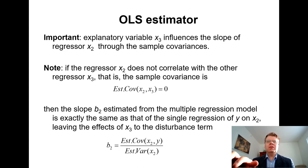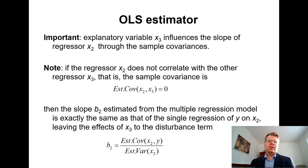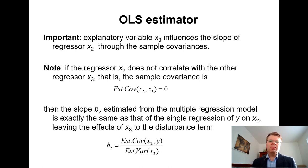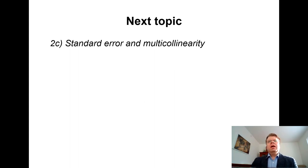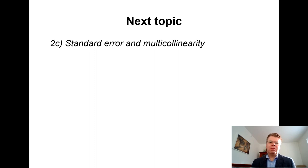The interpretation of B2 in the multiple regression context is the marginal effect of X2 conditional on the other variable, so the impacts of other variables are also taken into account in the estimation. As a next topic, I will introduce the standard error and multicollinearity, which is closely related to this correlation between explanatory variables. Thanks for your attention and see you in the next lesson.